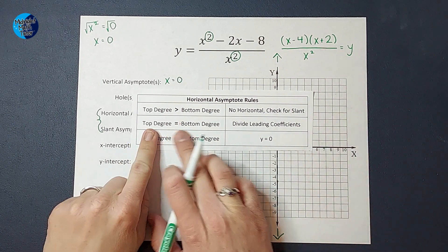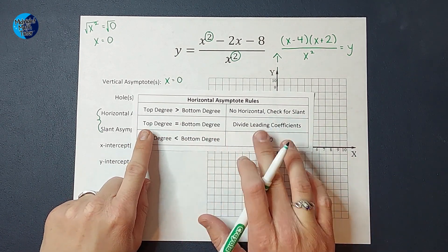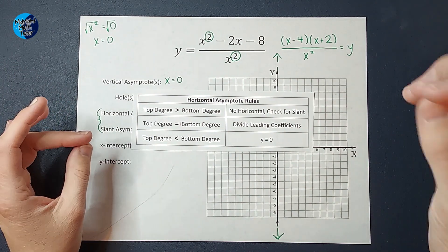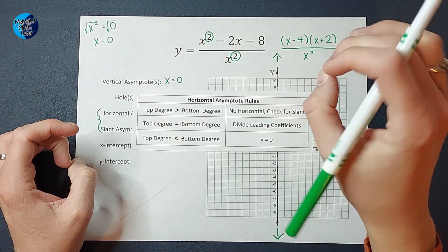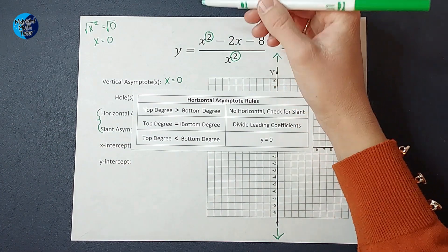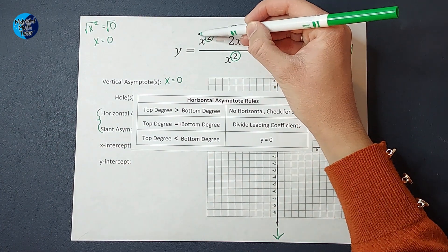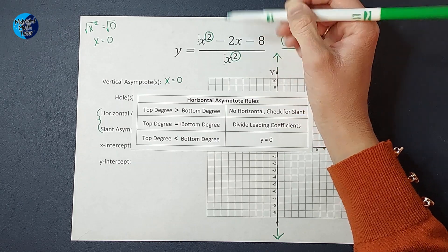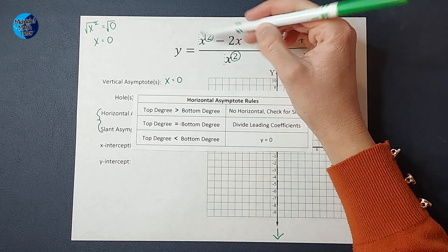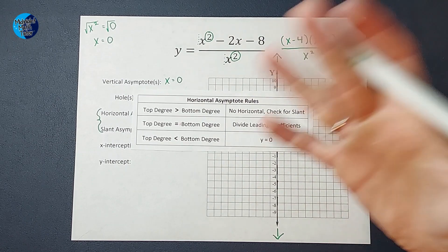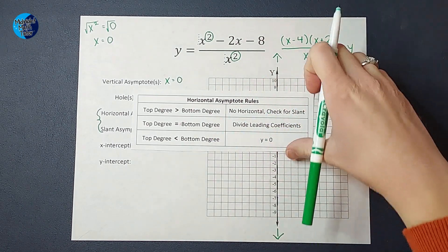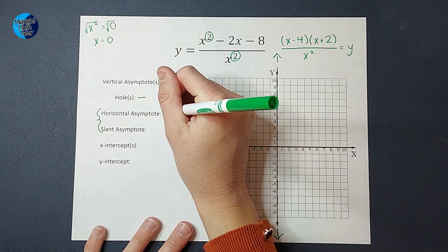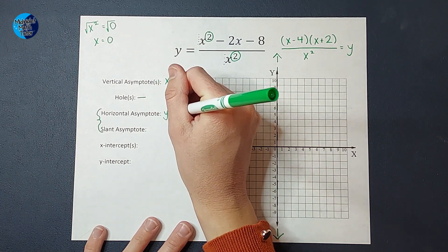Okay. So for ours, the top and the bottom degree are equal. So we're going to divide our leading coefficients. Leading coefficients is the number in front of the variable with the highest exponent, which you might be like, there's not a number there. But if there's not a number there, there's always like an invisible one. So dividing those leading coefficients would be one over one, which just simplifies down to one. So my horizontal asymptote is going to be y equals one.